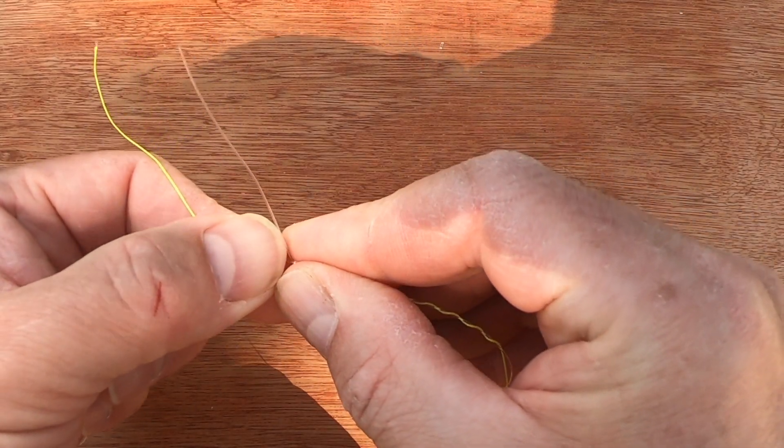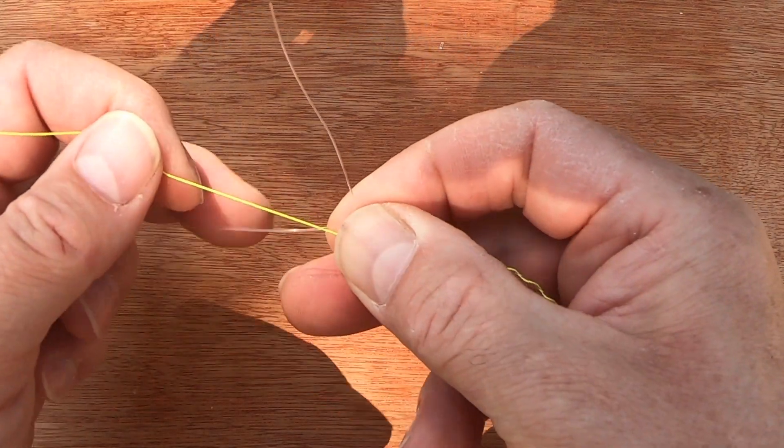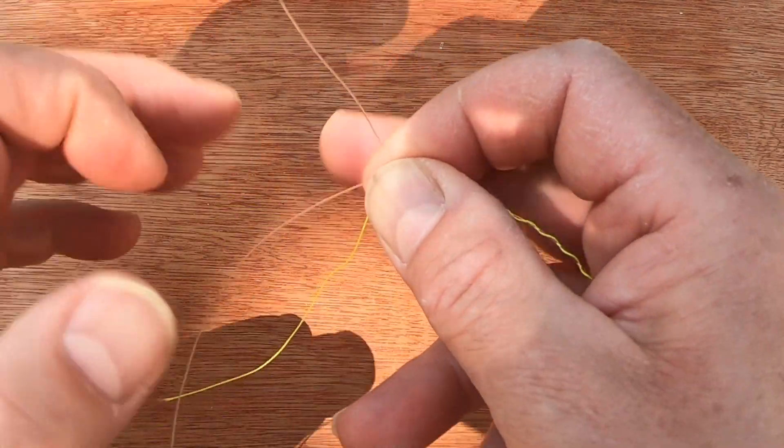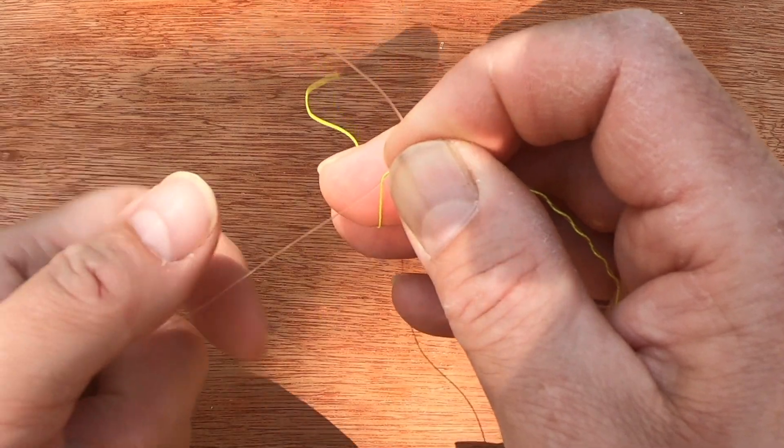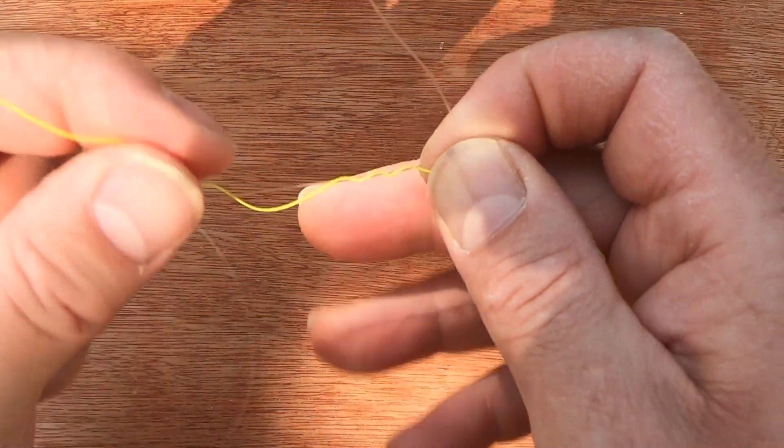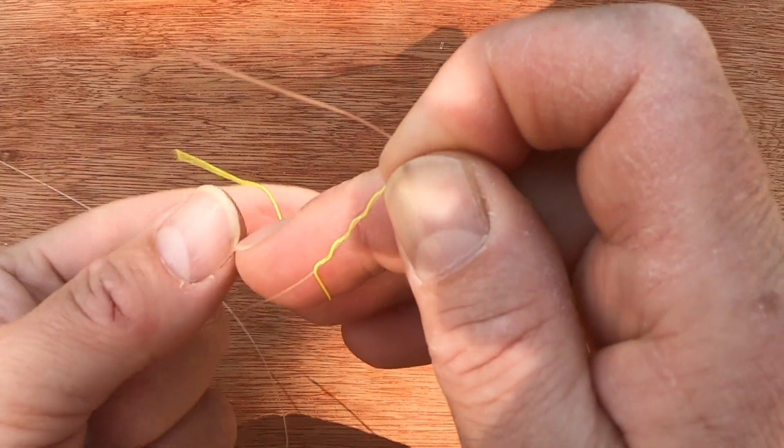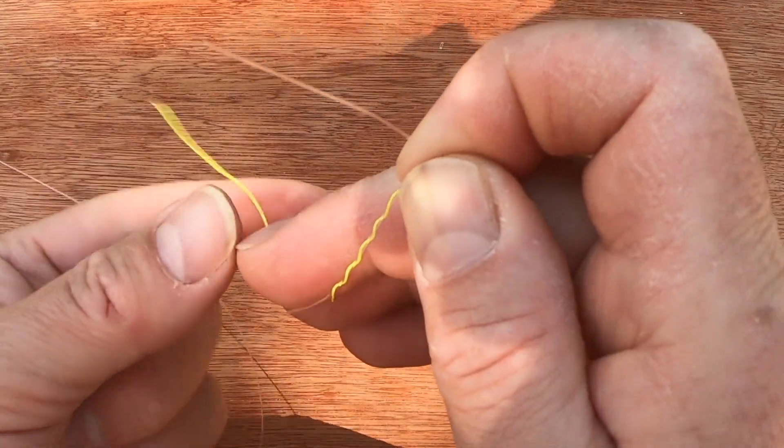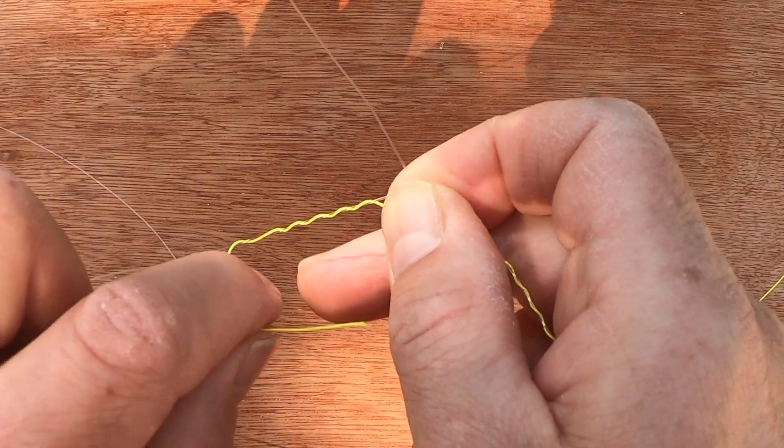And then passing the tag end back through by my finger and thumb, the loop I've created there. Then I'm going to hold that with the other hand, the finger from the other hand, and do the same with the other piece of line. For demonstration purposes now, you don't want to make these loops too tight at this point.